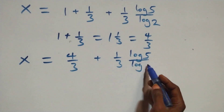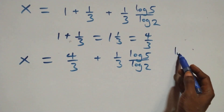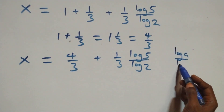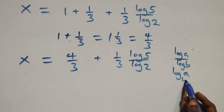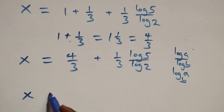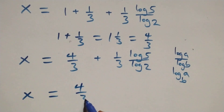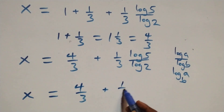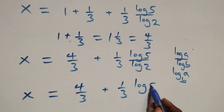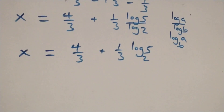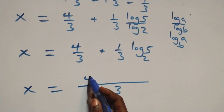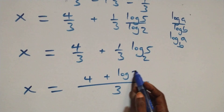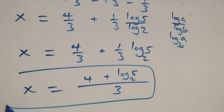We apply the change of base rule: log a over log b equals log a to base b. So x equals 4 over 3 plus 1 over 3 times log₂5. Bringing this together as one fraction gives x equals (4 plus log₂5) all over 3.